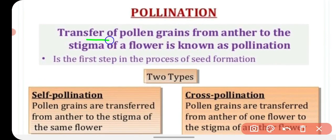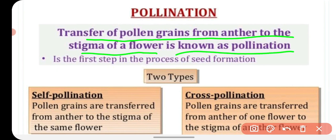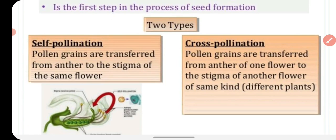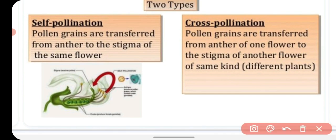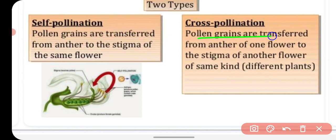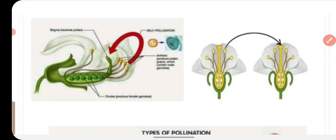Pollination is the transfer of pollen grains from the anther to the stigma of a flower. There are two types: self-pollination, where pollen is transferred from the anther to the stigma of the same flower or plant, and cross-pollination, where pollen is transferred from one plant to the flower of another plant.